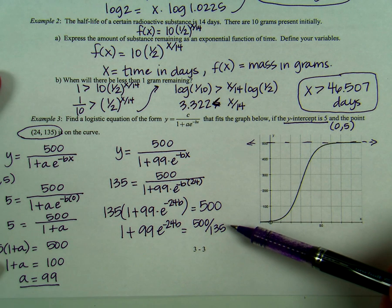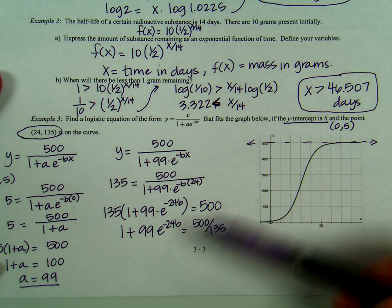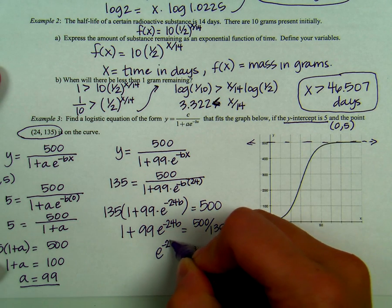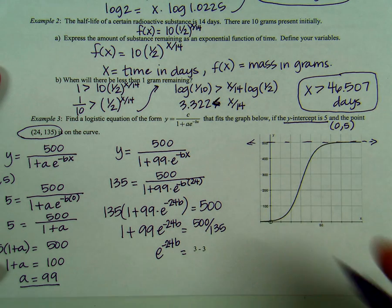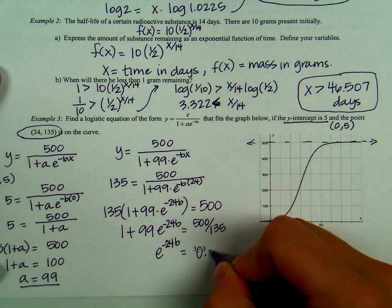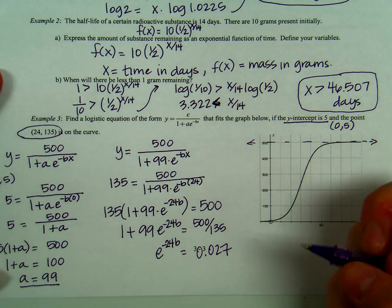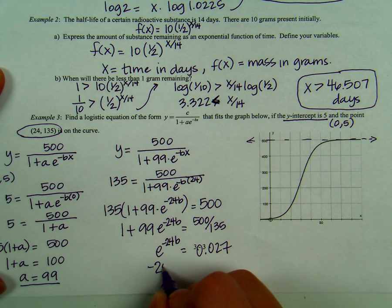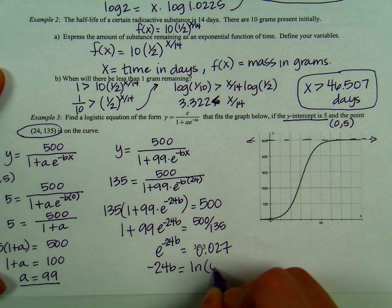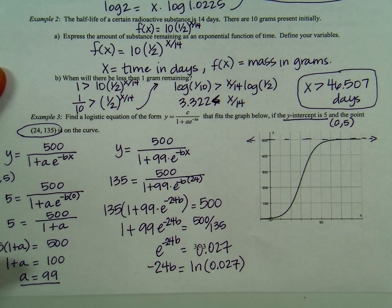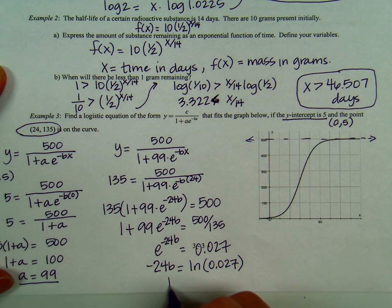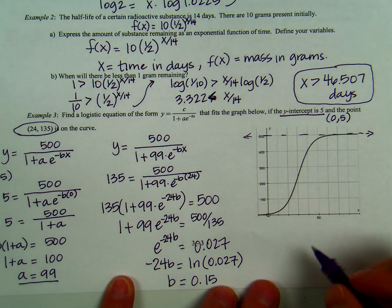In the next step, you can go ahead and in your calculator plug in 500 divided by 135, subtract 1 and then divide by 99. When you do that, you get e to the negative 24 b equals 0.027. Now, remember when you're working with e as your base, you need to use the natural log. So in this case, we're going to get negative 24 b equals the natural log of 0.027. Now you're just going to plug in your calculator, take the natural log of 0.027 and divide by negative 24. When you do that, you get b equals 0.15.